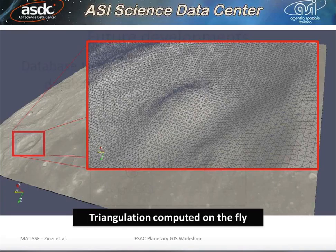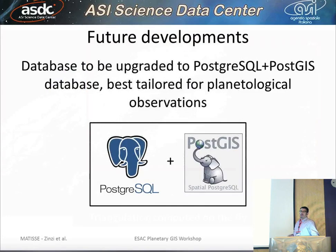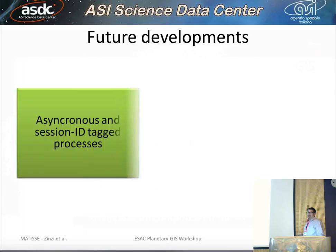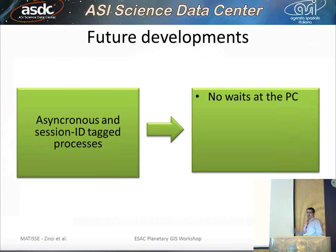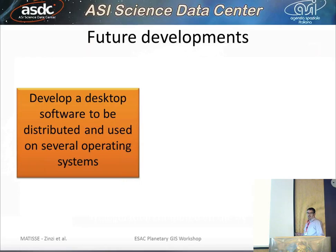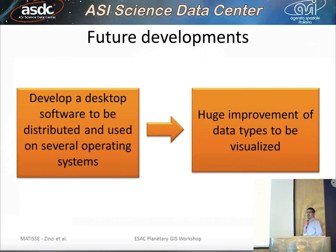In the future, we want to change the database underlying Matisse. Currently we have a MySQL database, but we are planning to switch to a Postgres one that is better for geospatial information. For non-surface measurements, we are studying a method to show the coma. We are planning Matisse 2.0 with asynchronous and session-based target processes, so there is no need to wait for the process to end. Error management will be better handled, and processes can be sped up through reuse of already computed outputs. We are also developing a desktop software based on vtpmaker.py, so different data types can be visualized beyond Matisse.